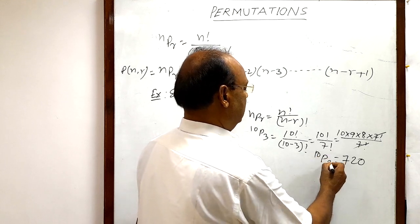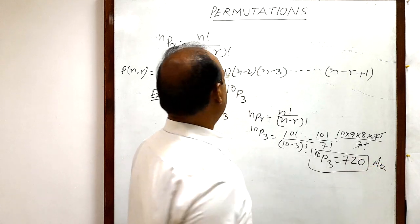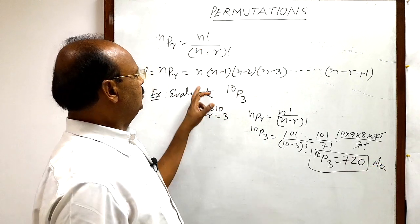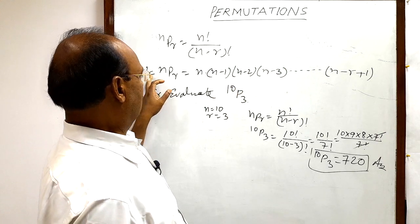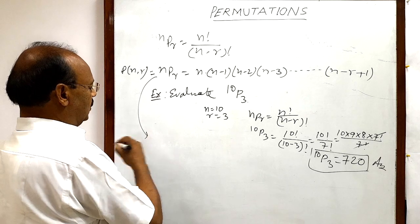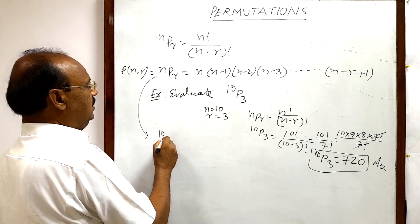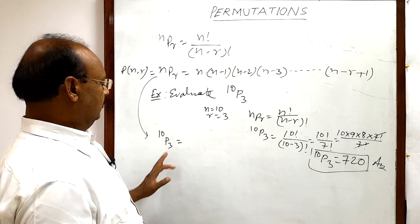So 10P3 is equal to 720. This is the answer. We can use this formula also for solving this problem. So let us use this formula. 10P3, we have to evaluate this one.